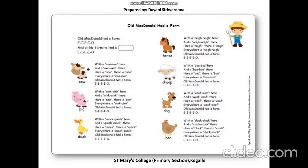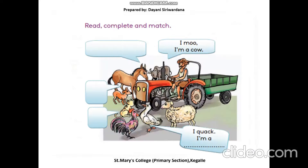So like this you can practice the song. Move to the workbook activities. Read, complete and match. There is a farmer. There are some animals. The cow is saying something — I moo, I am a cow. Now, look at the duck — I quack, so I am a duck. Like this, you can complete the blanks given in this page.